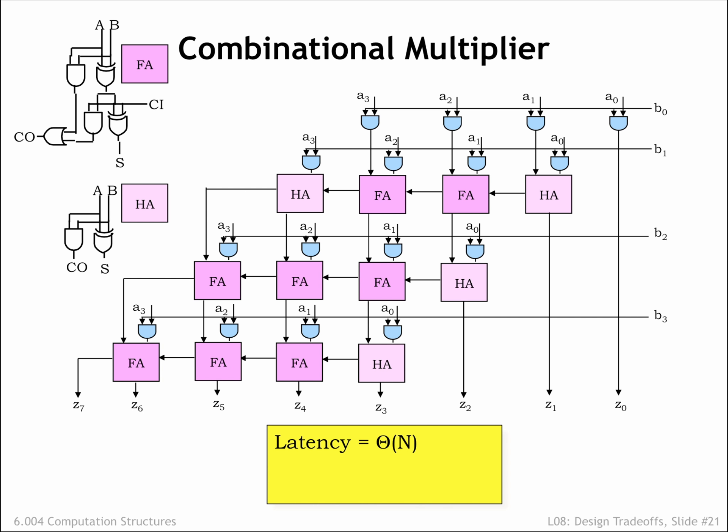So the latency is order n, since m and n differ by just some constant factor. Since this is a combinational circuit, the throughput is just 1 over the latency, and the total amount of hardware is order n squared.